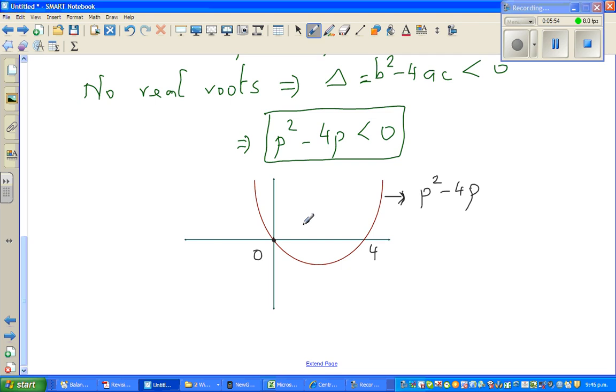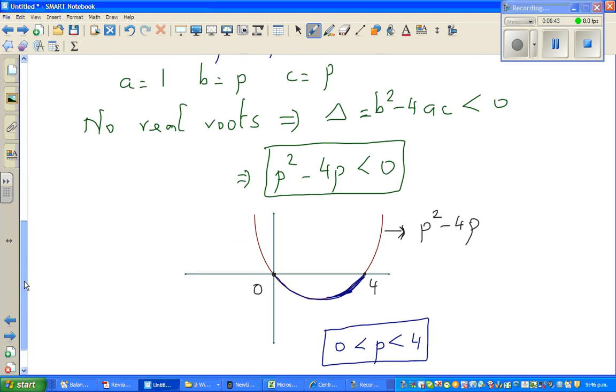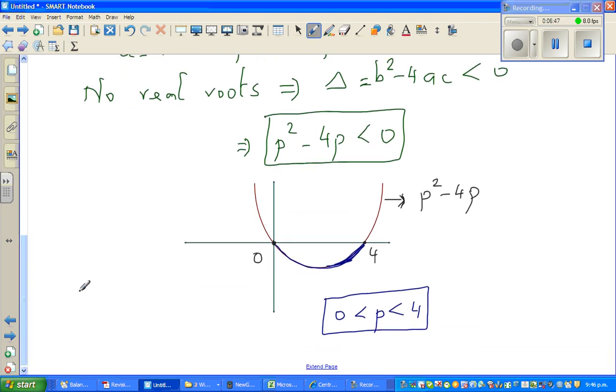Now you have to think, when is this parabola becoming less than 0? At 0 and 4, the parabola becomes 0. So the question is, when is this becoming less than 0? We're talking about this part of the parabola. For which values of p is the parabola going underneath the x-axis? I can say it is when p is greater than 0 and less than 4. You take any value of p between 0 and 4, and then you will get a parabola which will have no root.